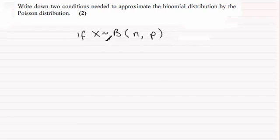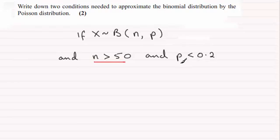So if you've got a random variable X distributed binomially, then if the number of trials n is greater than 50 and p the probability of success is less than 0.2, then these are the two conditions that they're looking for.